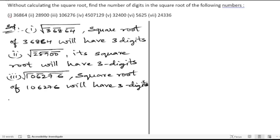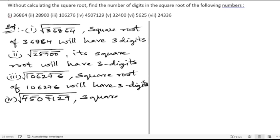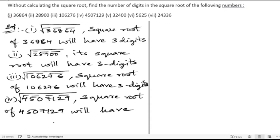Next, the fourth problem: 4507129. We put the bars and get four bars. So the square root of 4507129 will have four digits.